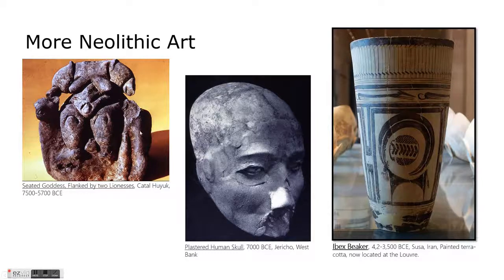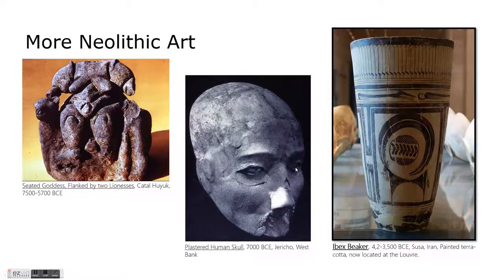Like Paleolithic art, we also see a celebration of wild cats — lions and leopards. Here we have a wall carving of two leopards facing each other. Similarly, on this seated goddess from Çatalhöyük, she's seated on a throne made of two lioness or leopard creatures as the two sides of the seat. Notice that she is somewhat reminiscent of the Venus figures we saw throughout the Paleolithic period — very similar to the Venus of Willendorf.